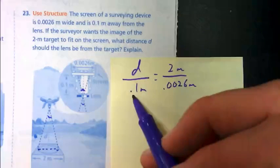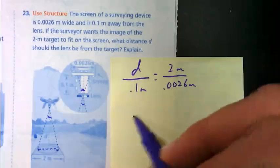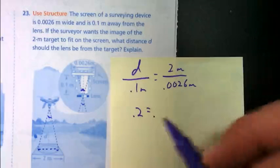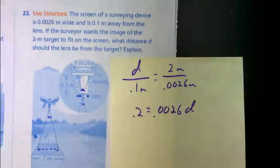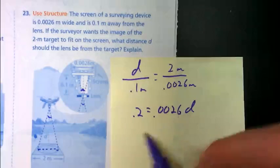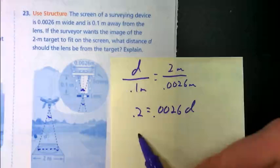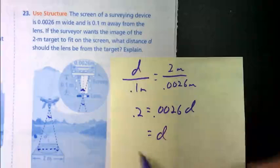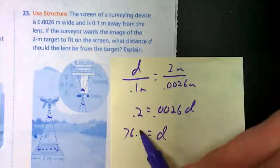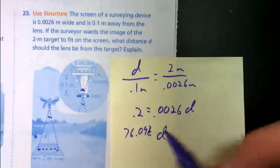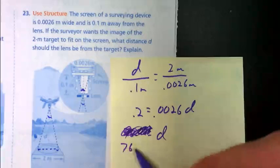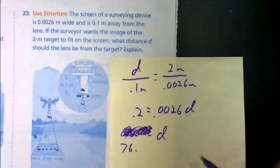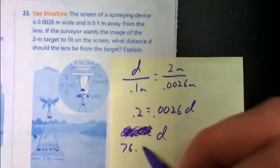Now, cross-multiply and solve. So, when you cross-multiply and solve here, 0.1 and 2 becomes 0.2. And this becomes 0.0026 times D. And all we have left to do is divide off the 0.0026, which is 76.923.